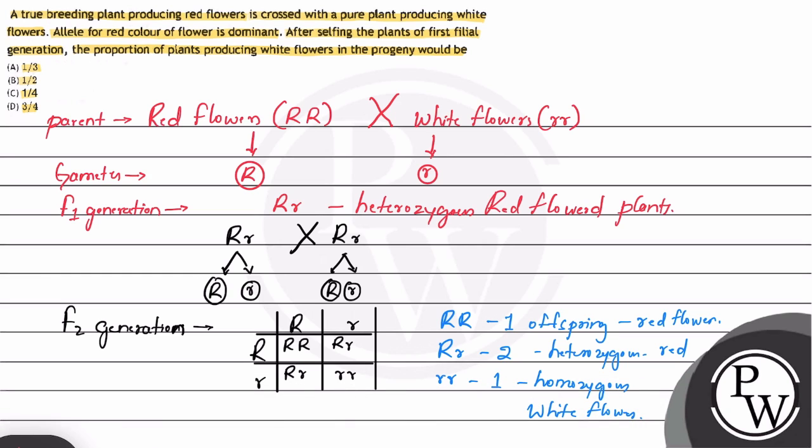So out of four plants, three will be red and only one will be white. Therefore, for this question: A true breeding plant producing red flowers is crossed with a pure plant producing white flowers. Alleles for red color of flower is dominant. After selfing the plants of first filial generation, the proportion of plants producing white flowers in the progeny would be... the correct answer is option C, that is one by four.